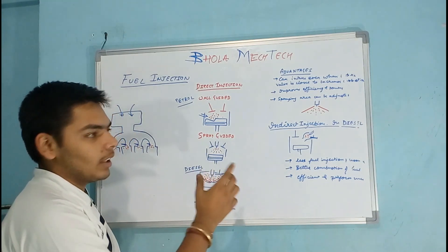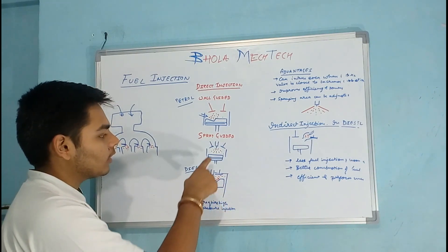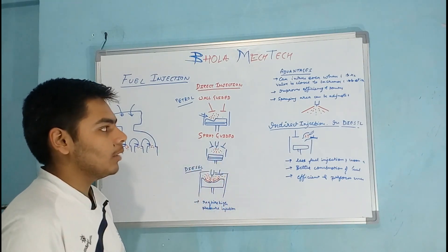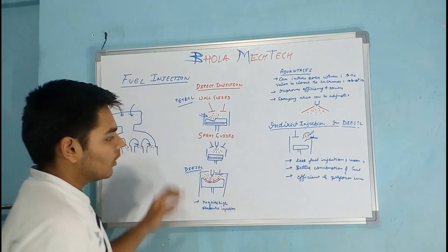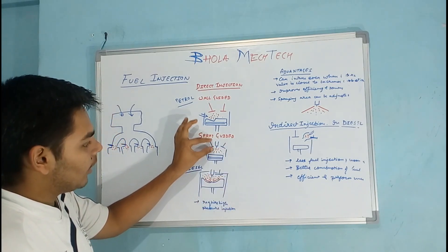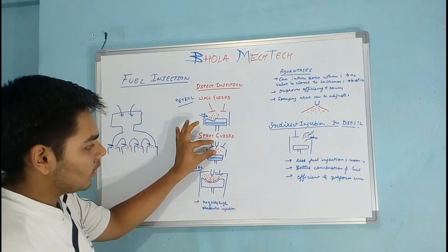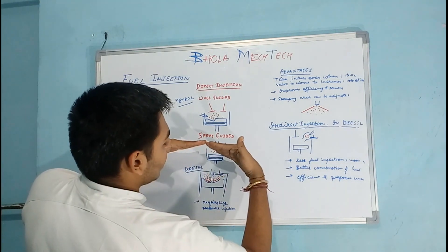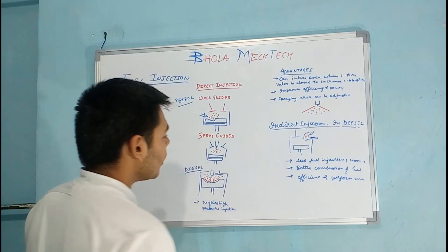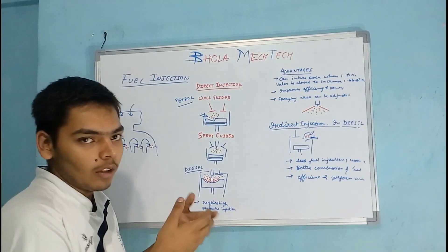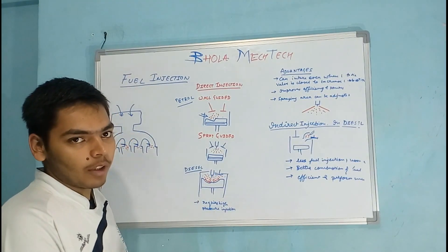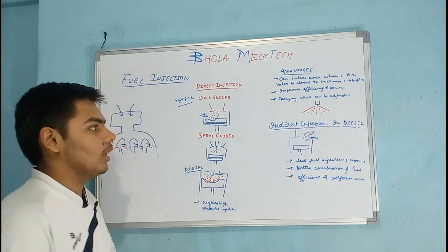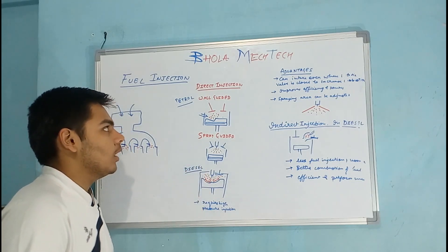The spraying area can also be adjusted. The spraying area of this injector can be adjusted — if the injector is placed slightly downward, the area of injection will increase and the spray will cover the complete cylinder. So this is adjustable, which is another advantage of direct injection.